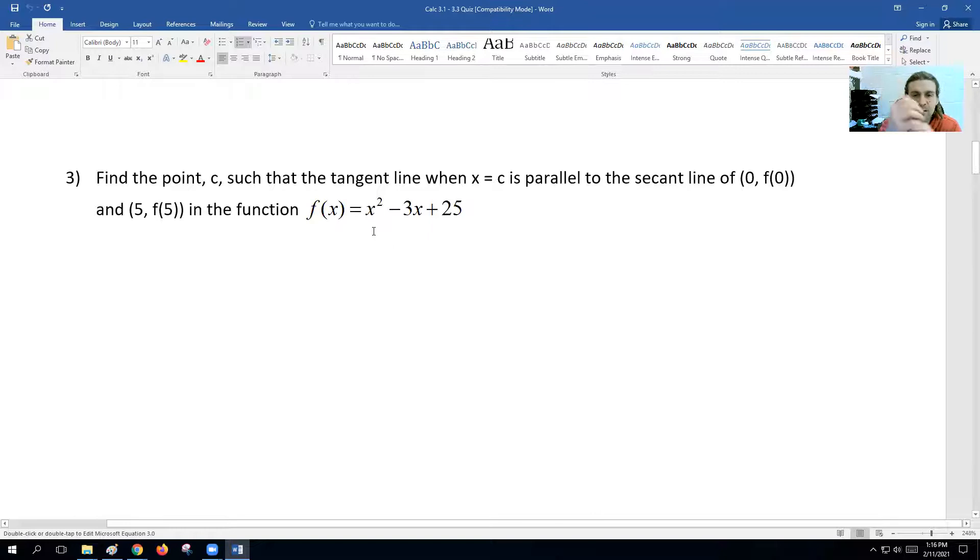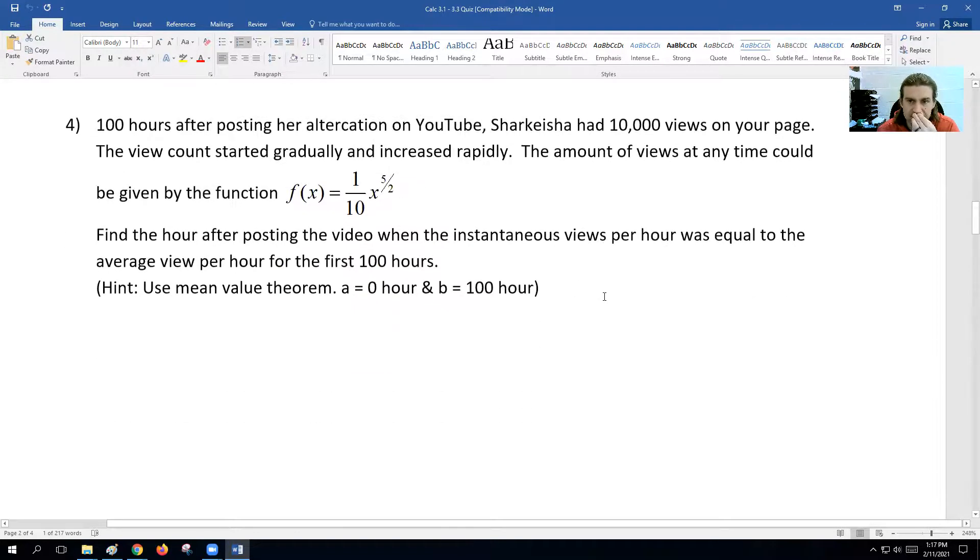The next problem is a mean value theorem problem. You need to do four steps for this one. First, you need to find the average value. We have two numbers here: zero and five. You're going to plug in f(5) minus f(0), subtract those numbers, and divide by 5 minus 0. So you do f(B) minus f(A) over B minus A. Then you take the derivative of the equation. Third, you set the derivative equal to the average value. Fourth, you solve for X. That number you solve for will be the C that is tangent or its tangent is parallel to the secant line.